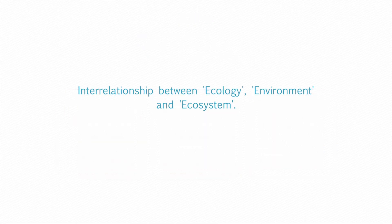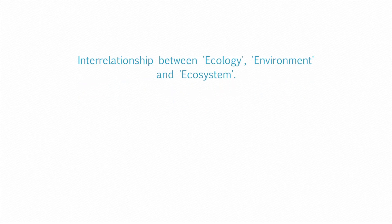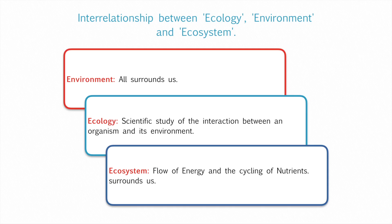The interrelationship between Ecology, Environment and Ecosystem: Environment is all that surrounds us. Ecology is the specific study of the interaction between the organism and its living habitat. Ecosystem is the actual flow of energy and the cycling of nutrients around us.